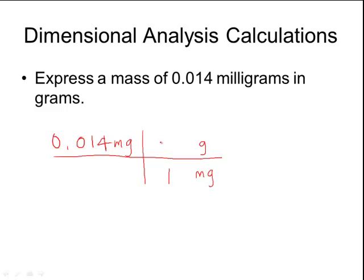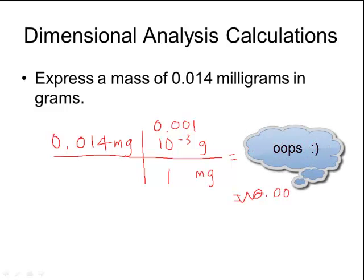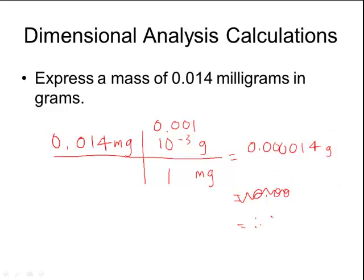Remember that one milligram is the same as 10 to the negative third grams, because milli, that prefix milli, means 10 to the negative third. 10 to the negative third is also the same as 0.001. And now I'm just going to multiply 0.014 times 0.001, or times 10 to the negative third. And I will get 0.000014 grams as my answer. That's a lot of zeros to write, so sometimes it's easier to write it in scientific notation, 1.4 times 10 to the negative fifth grams.